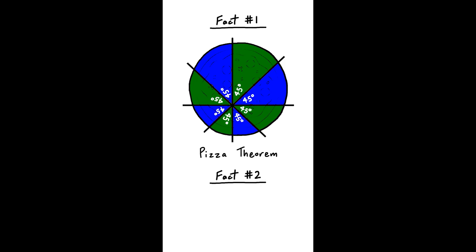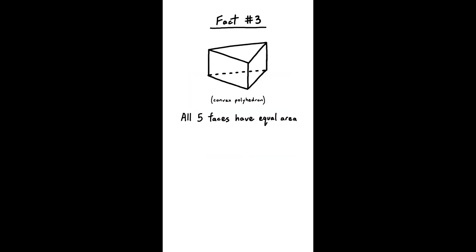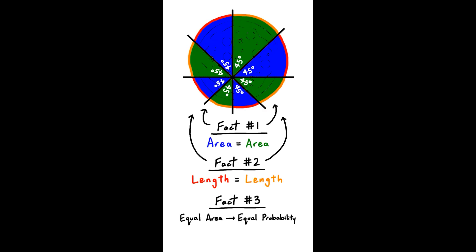Second fact, not only is the area the same, but the amount of crust is as well. By crust, I just mean the circumference, without any thickness. Third fact, if you have a shape with equal area faces, it has equal probability of landing on each face when you roll it like a dice. Pause now to think about which one is fake.